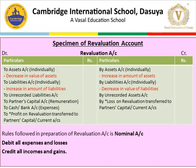The specimen of the revaluation account: all losses are on the debit side, all incomes on the credit side. If there is a profit, it is transferred to partners' capital account — partners' capital account appears on the debit side. If there is a loss, the debit side is greater and the loss is transferred to the partners' capital account, shown on the credit side because it is being transferred out.